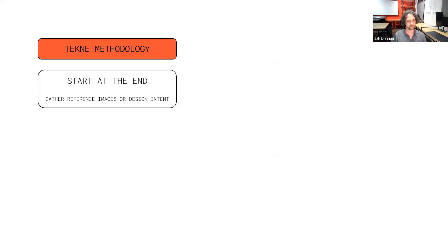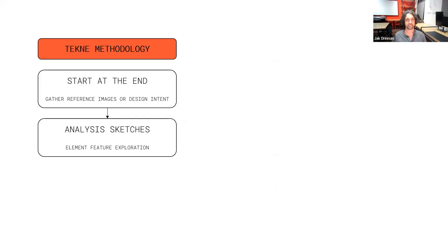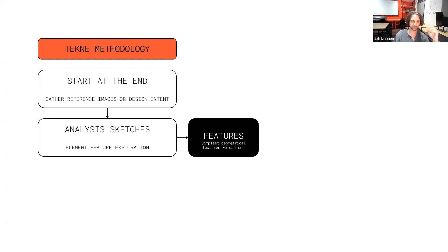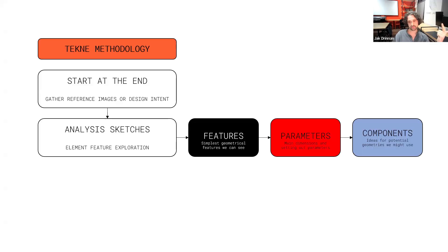It makes no sense to just start scripting without knowing what you're scripting. So this methodology is what I put together to help you start doing this yourself. The concept of starting at the end is where we begin — we gather reference images, sketch out ideas of what we want, then go through a process of analysis. We sketch-analyze our reference images, looking for features, parameters, and components, which we annotate in three different colors.